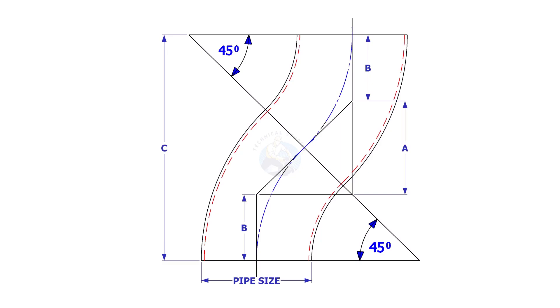Welcome to the technical studies. In this video, we will learn how to calculate the end-to-end distance of two forty-five degree elbows arranged as shown by some simple calculations. This method is not only simple, but you don't have to use a scientific calculator. Remember that this is for long radius elbows only.